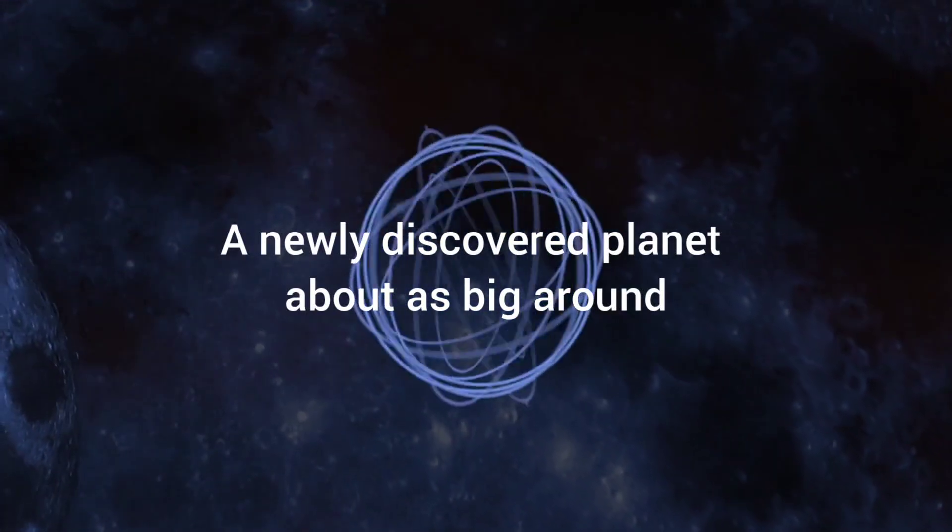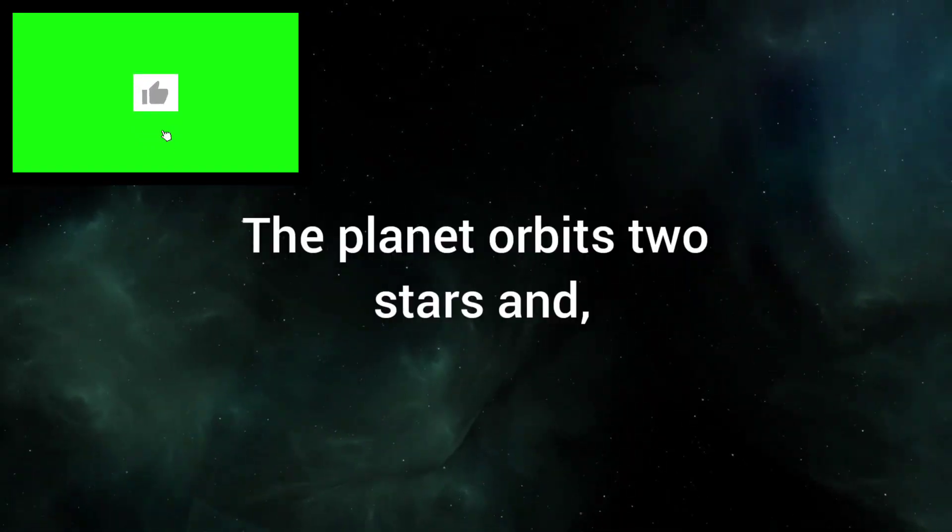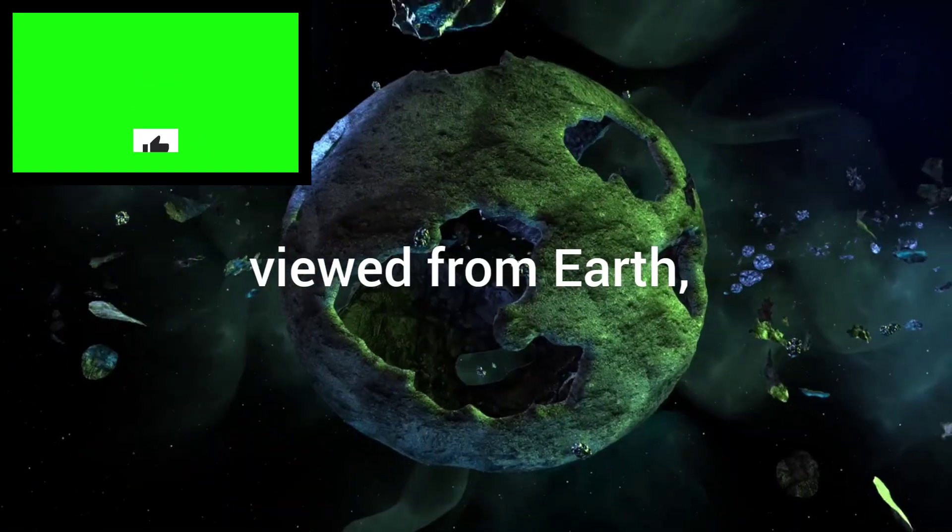A newly discovered planet about as big around as Jupiter belongs to a system that's a stunner. The planet orbits two stars and, viewed from Earth, crosses the faces of both.